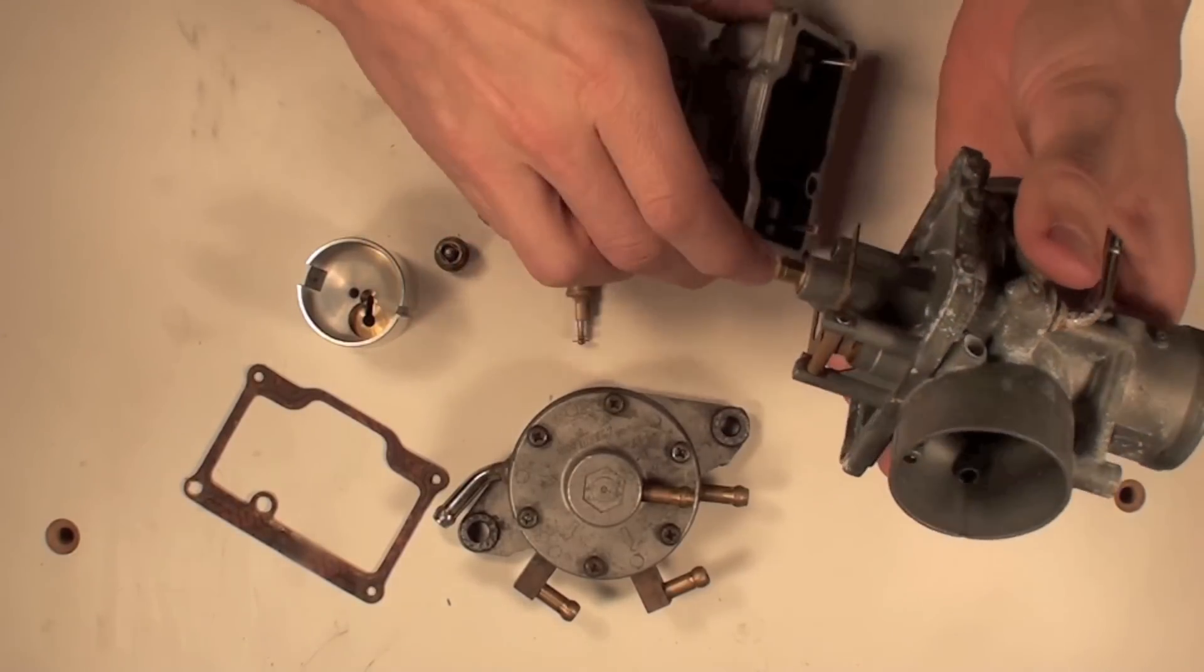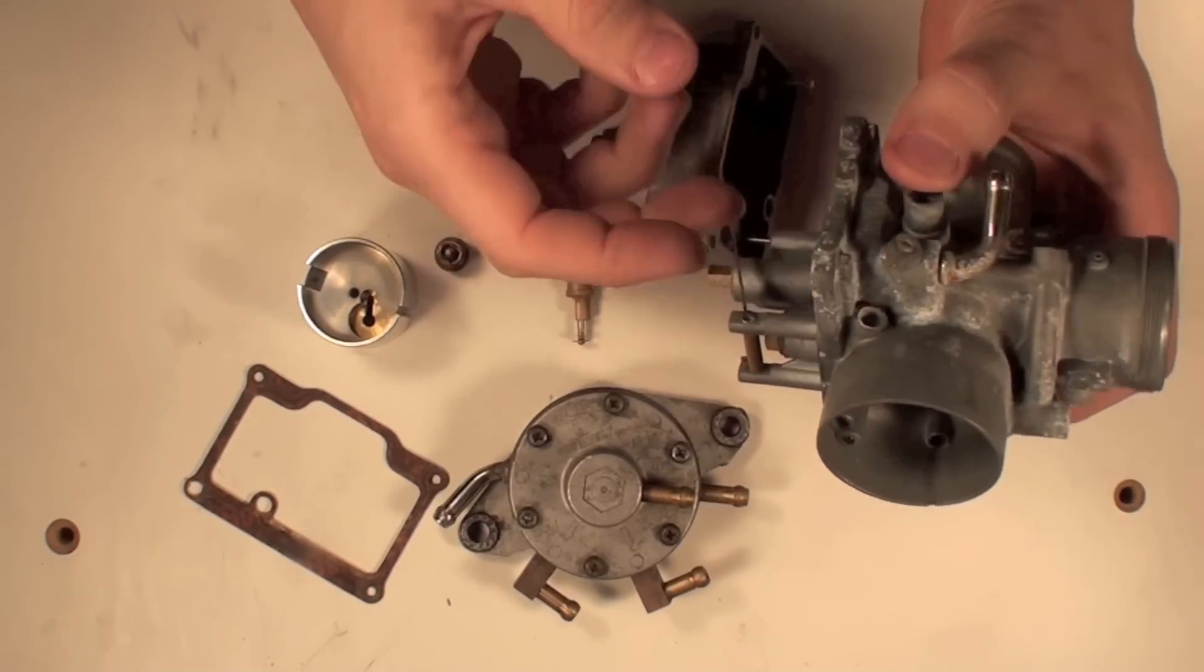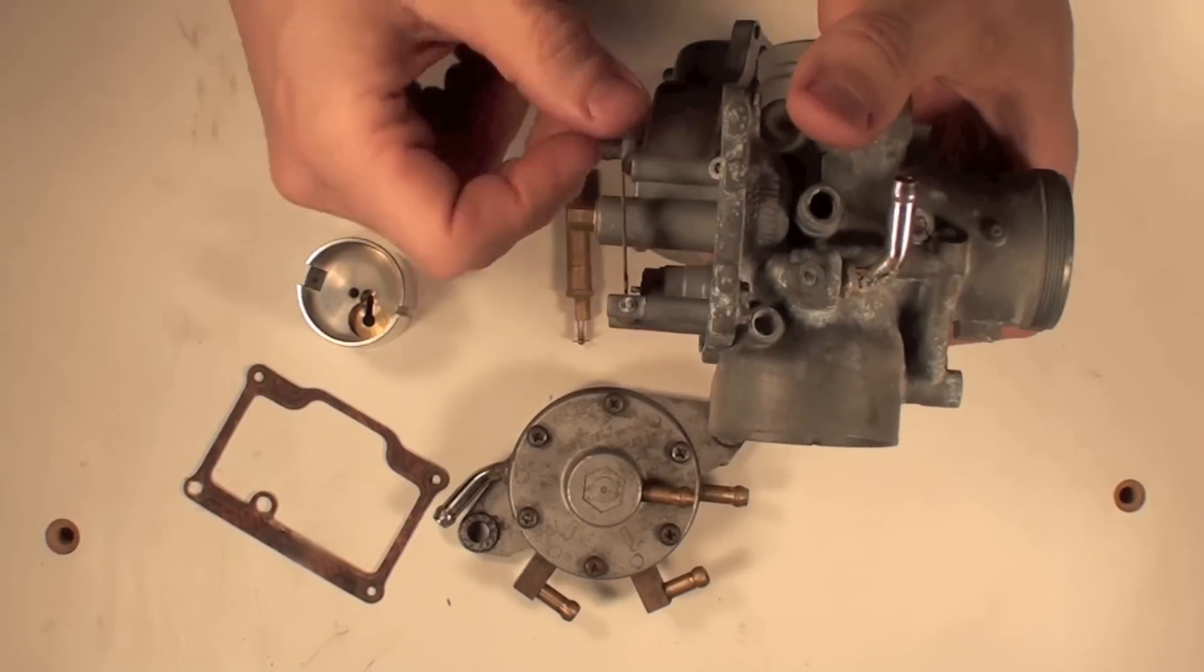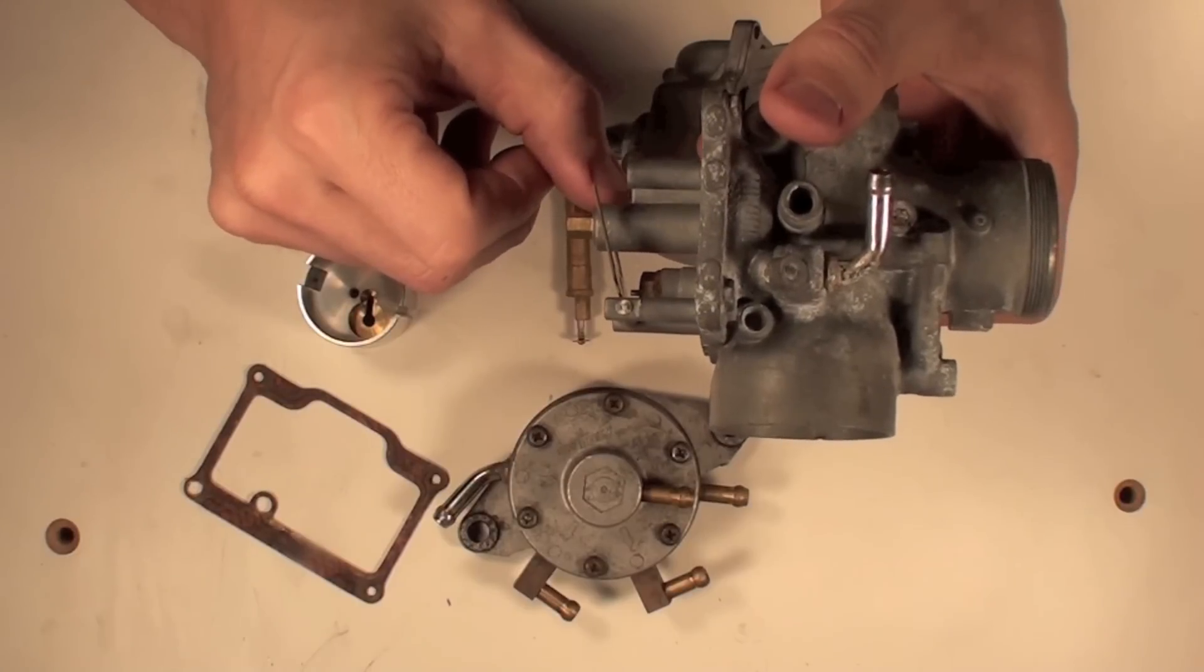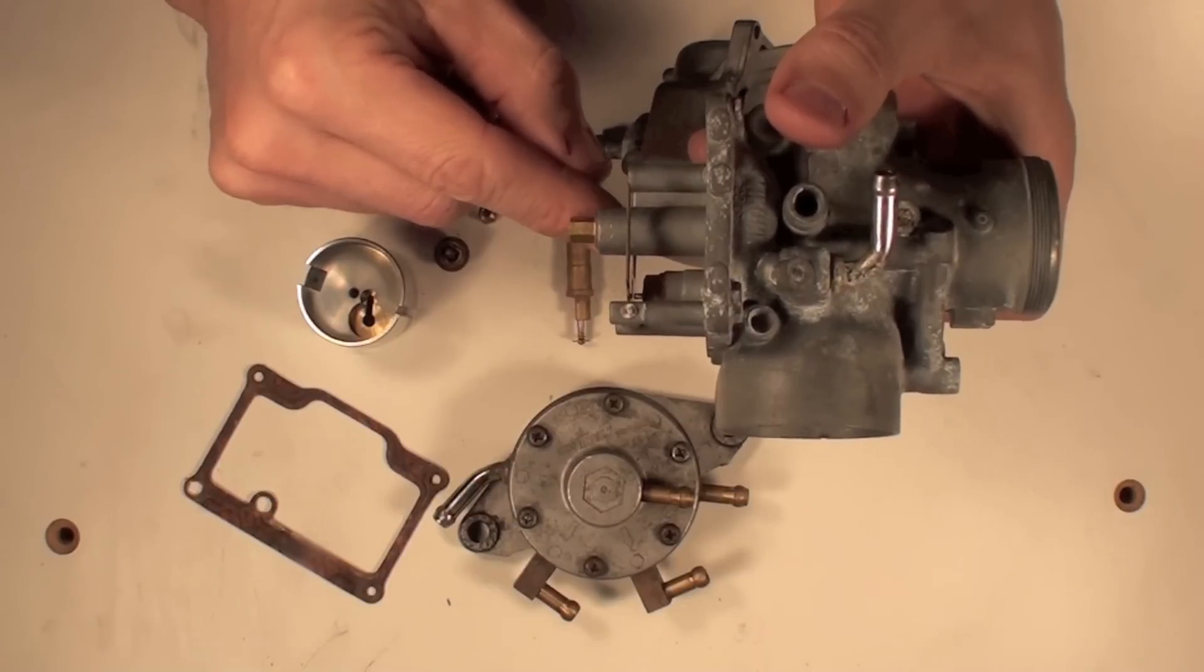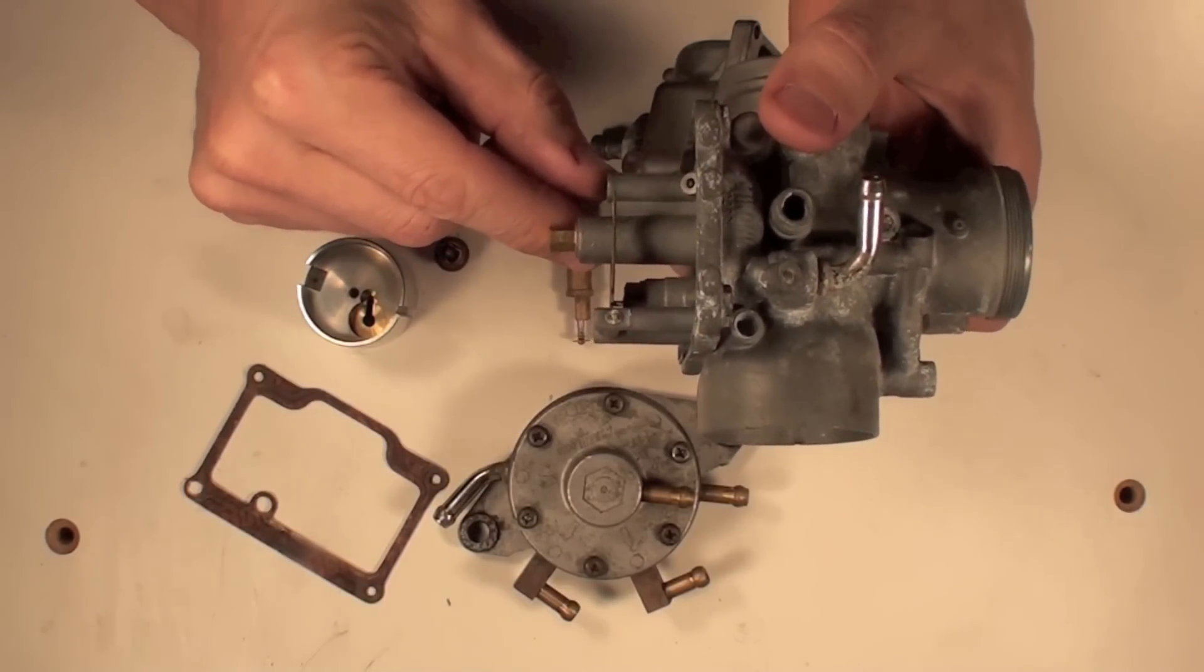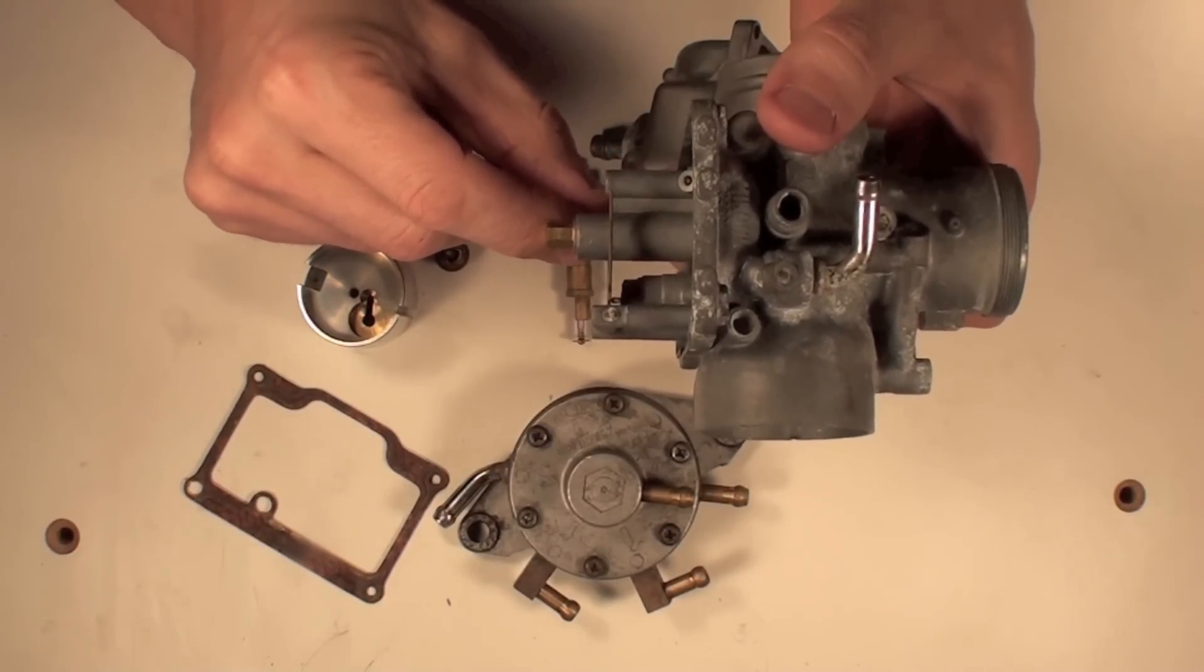Now, it is metered by the floats. As the bowl fills, the floats go up and they press on this arm here. This arm actuates the needle and seat. When the arm is down, like it is right now, you can see here, the needle is open, so the bowl will fill. When the floats come in contact with the arm, it pushes up and seals off the inlet. So it will restrict the flow of fuel into the carburetor at that time. As you require more fuel, the needle will open up and more fuel will be added. It's quite simple actually.